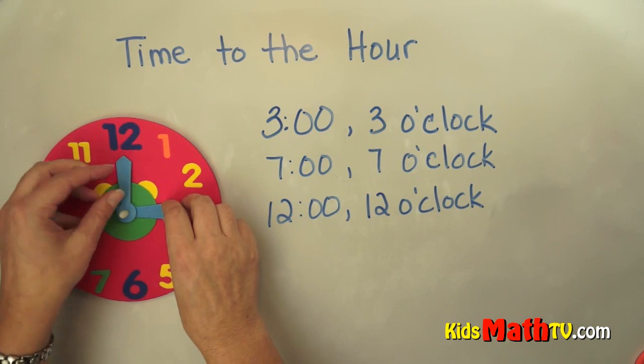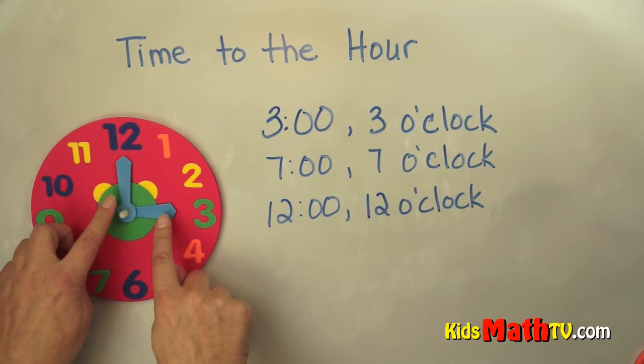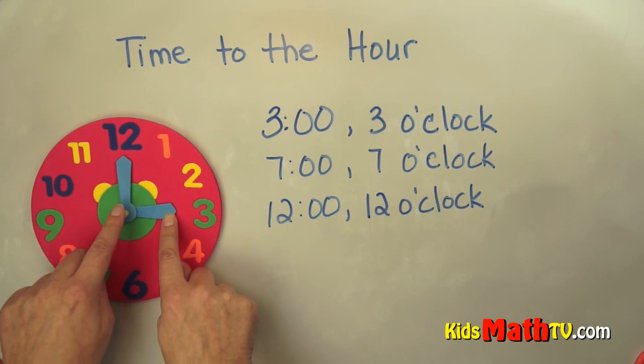And 00 is o'clock, which means it's straight up and down, straight with the 12. So this shows 3 o'clock.